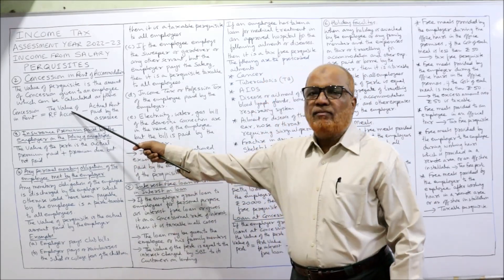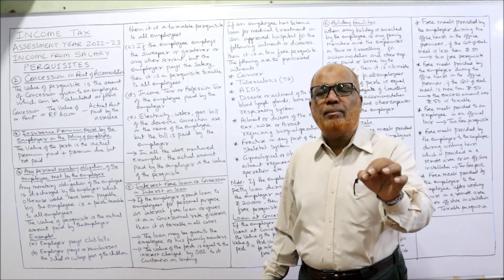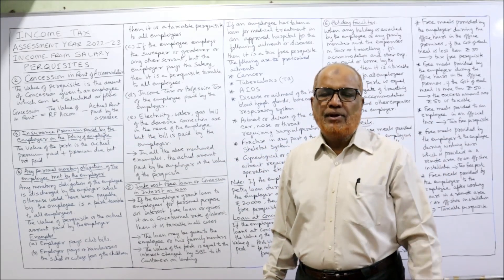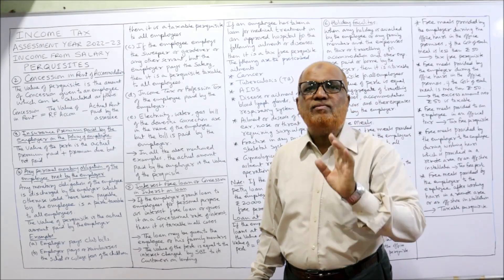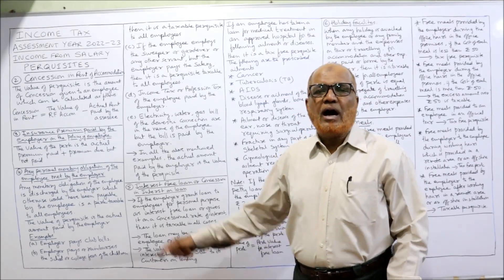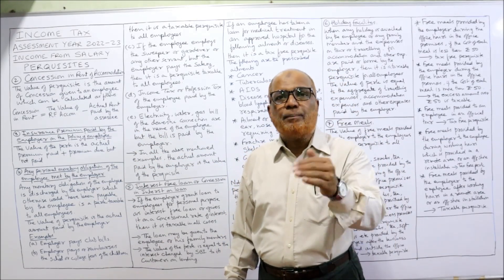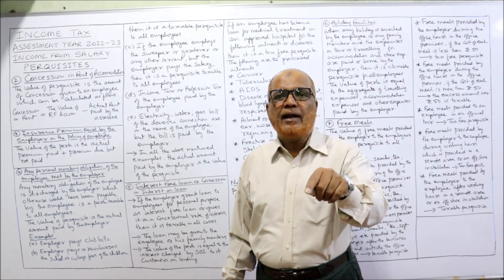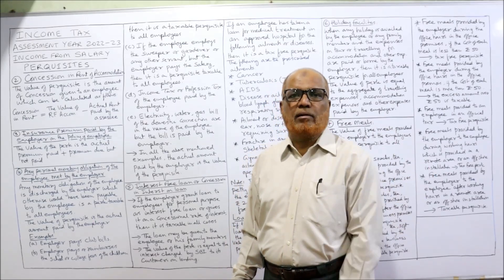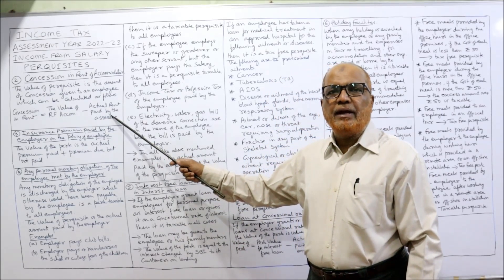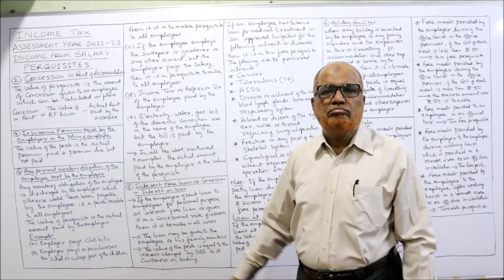To calculate the value of this perquisite, first treat the accommodation as rent-free and calculate its value. After calculating the value of the rent-free accommodation, subtract the actual rent paid by the employee to the employer. The difference — the concession amount — is the taxable perquisite.